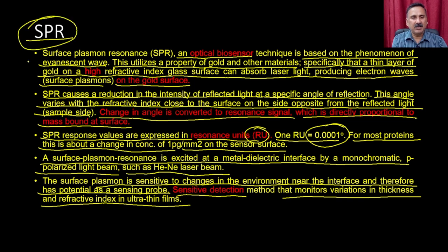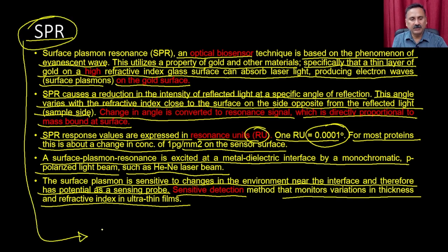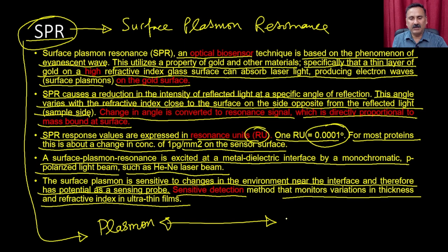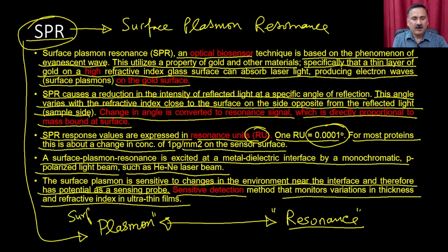The change in angle is converted into a resonance signal directly proportional to the mass bound at the surface. SPR response values are expressed in resonance units (RU), where 1 RU equals a 0.001-degree change in angle — for most proteins, this corresponds to a concentration change of about 1 picogram per mm³ on the sensor surface. SPR relies on two key concepts that must be understood: resonance and surface plasmon.